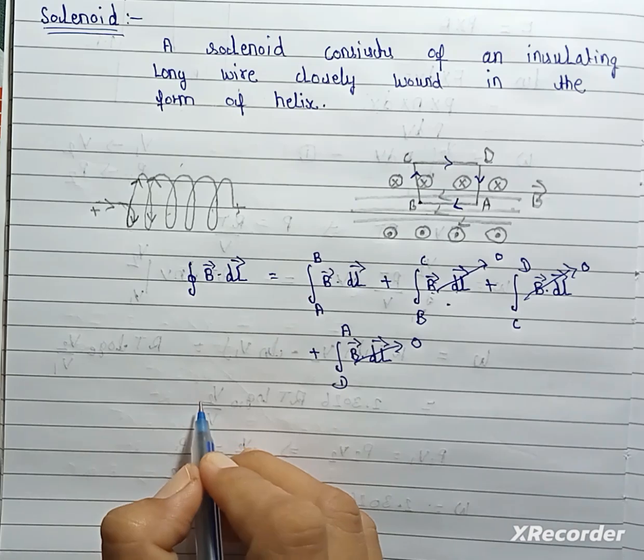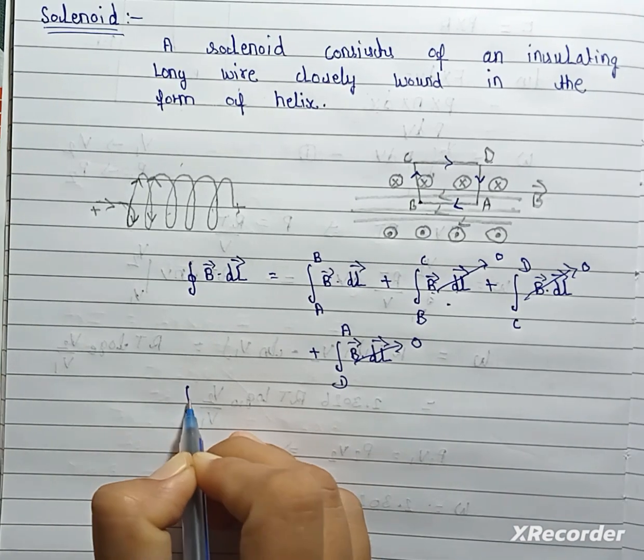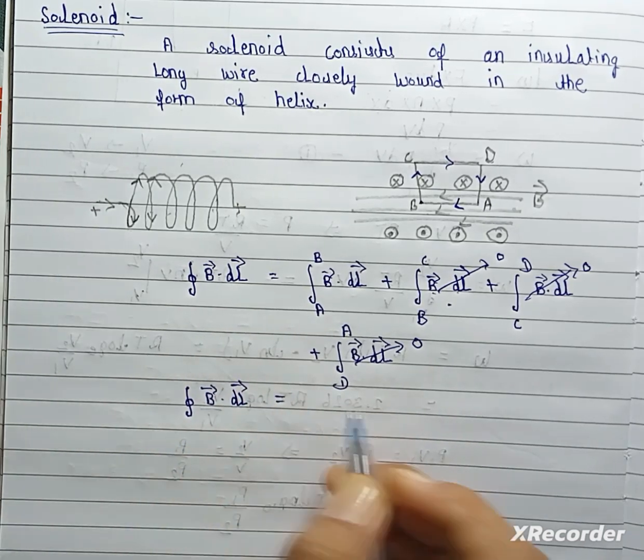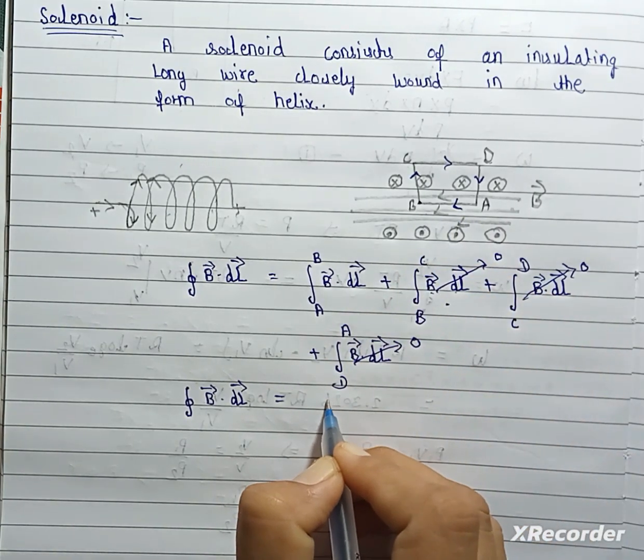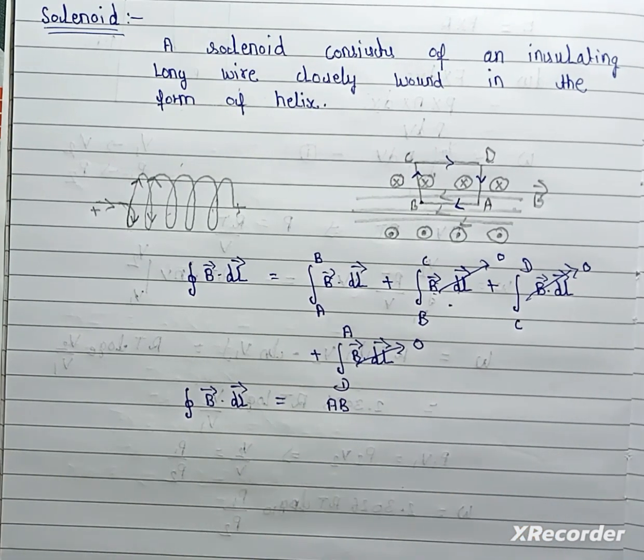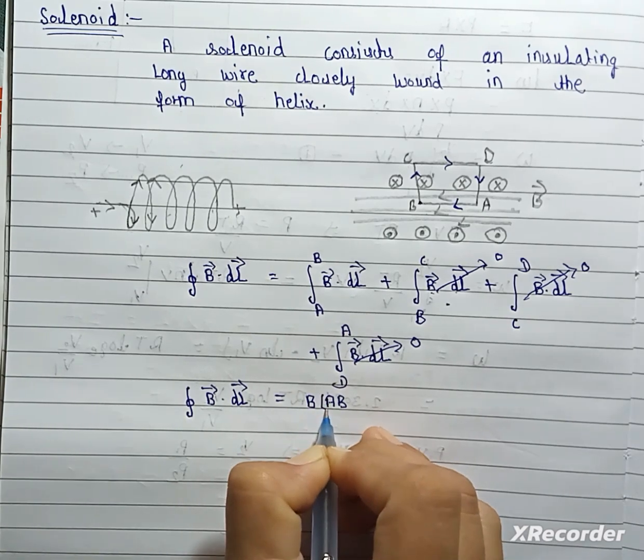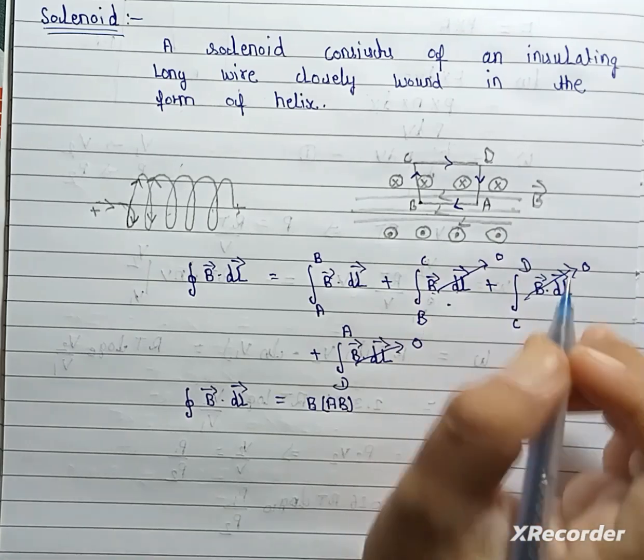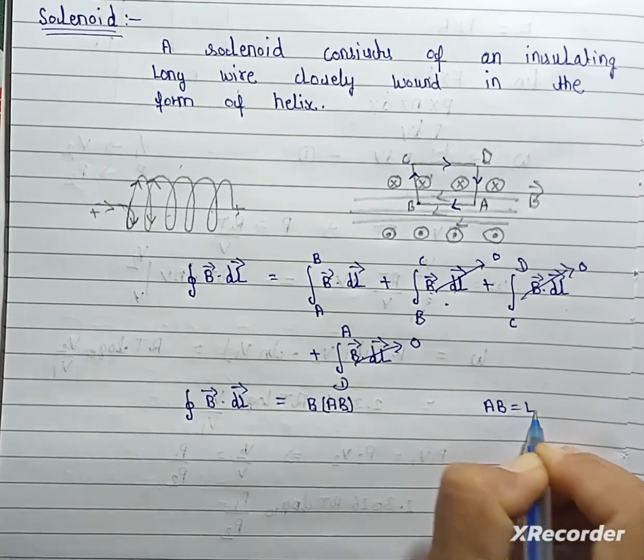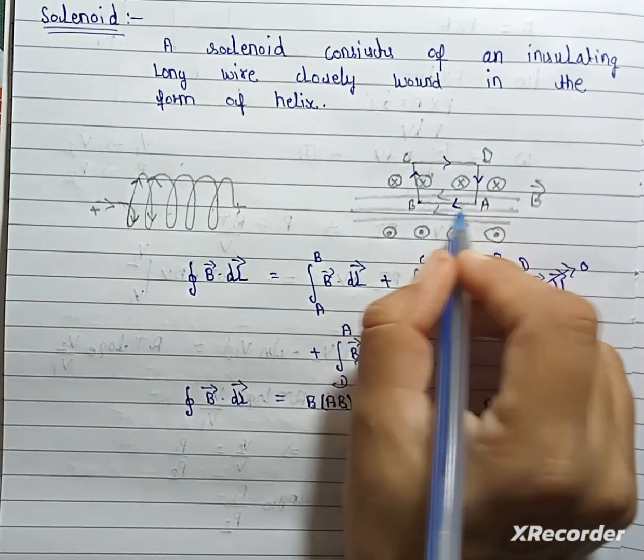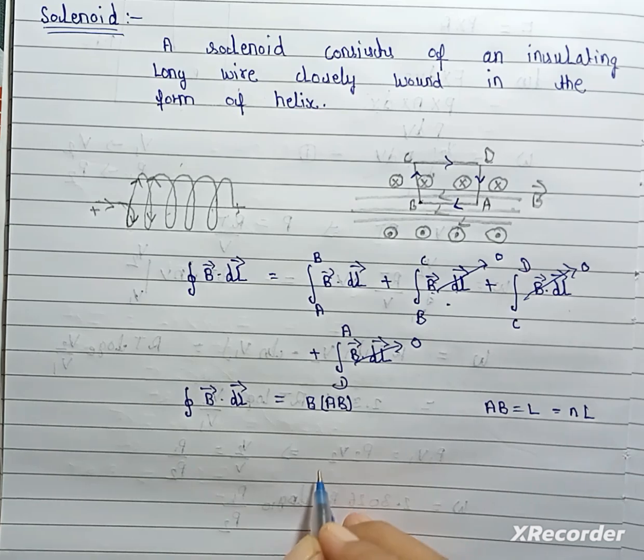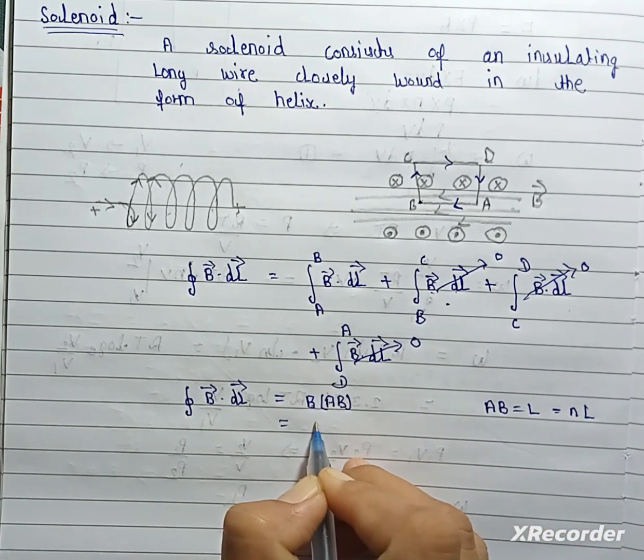So magnetic field for this ampere loop is equal to B dot DL only for line AB and this equals B times AB. AB represents the line length. AB equals L and number of turns for this line is n, so this equals nL. So we can replace AB equal to B into n times L.